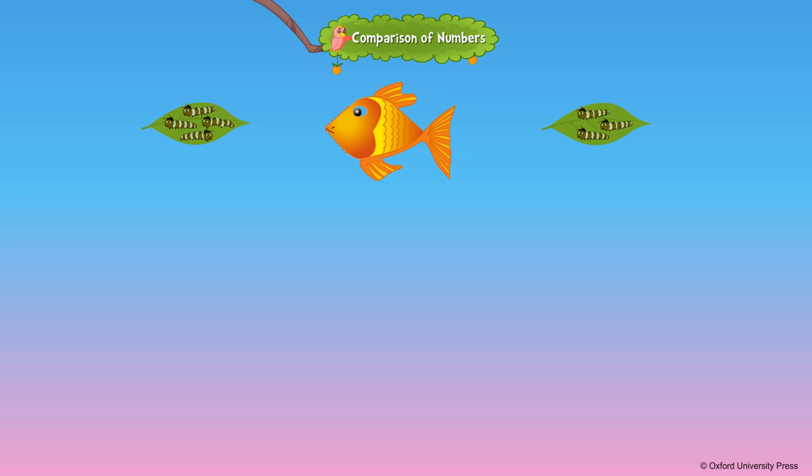The fish wants to have more food. So it opens its mouth towards the leaf with more number of worms.